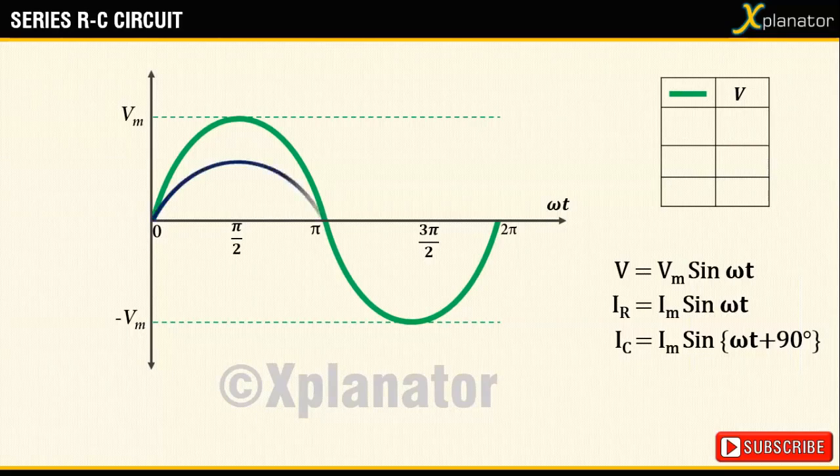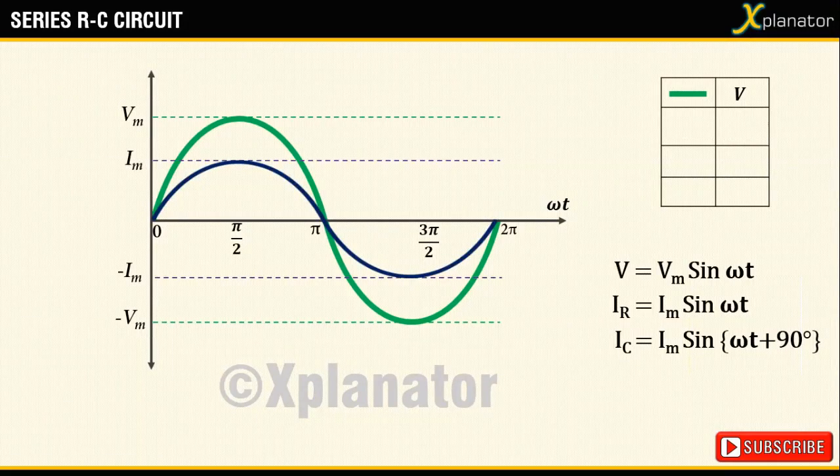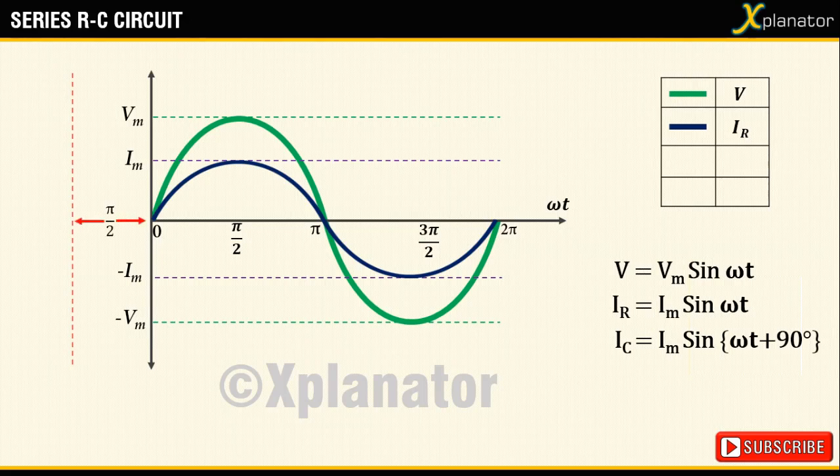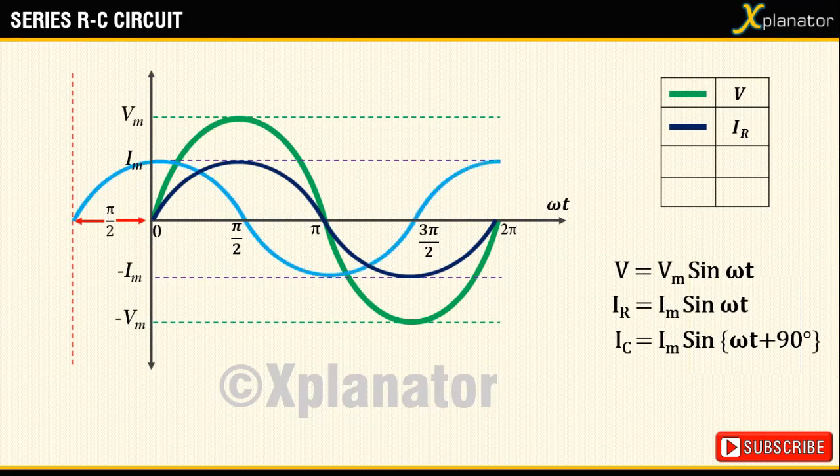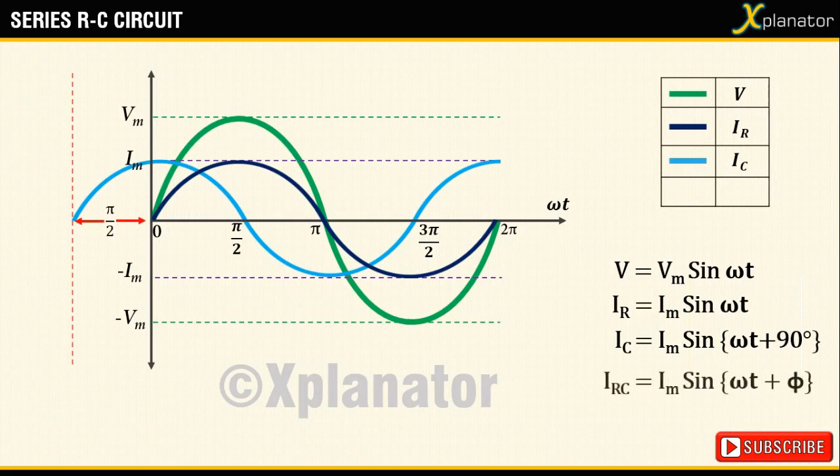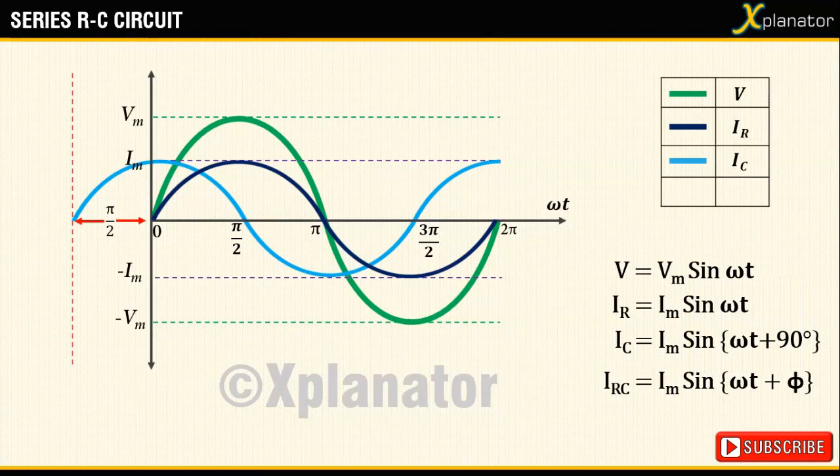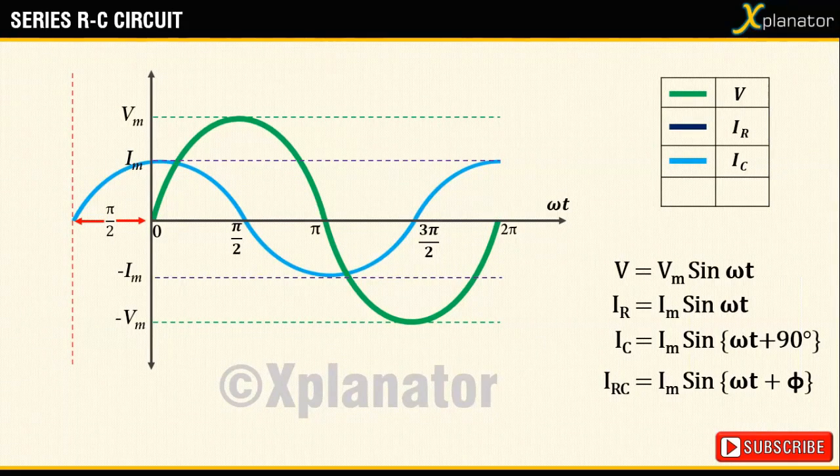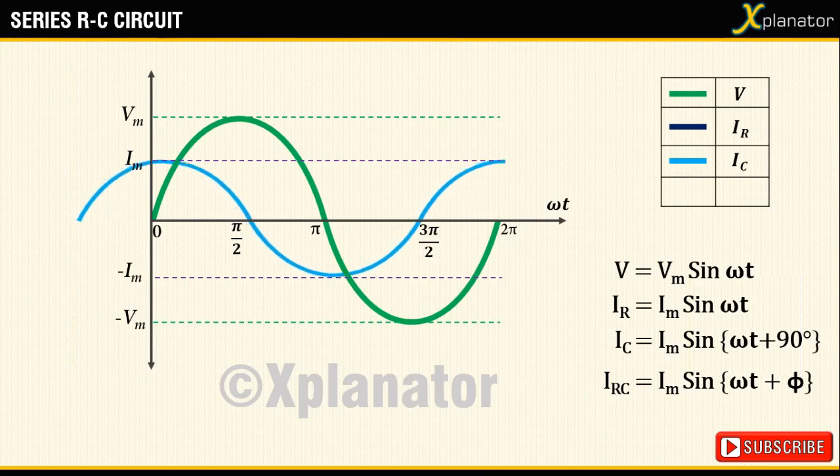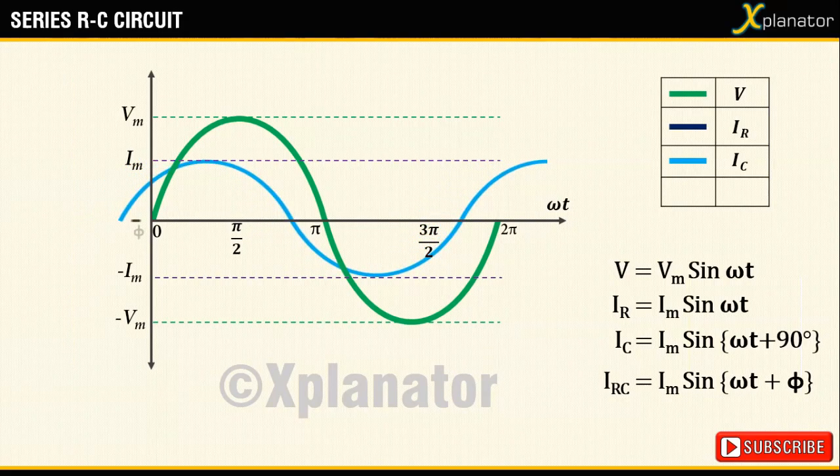In case of a pure resistor, current is in phase, so wave starts from zero, and in case of a capacitor, it leads by 90 degrees, hence it starts 90 degrees before the voltage wave. For RC, the phase angle phi is some value between 0 and 90, determined by the values of Xc and R. So, the final waveform will look like that shown here.